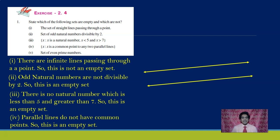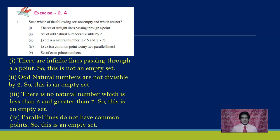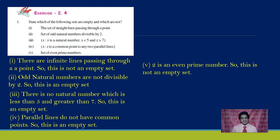Now look at the next one: the set of even prime numbers. Out of all the prime numbers, we know that 2 is the only even prime number. Since there is an element — namely 2 — in this set, it cannot be an empty set. So this is a non-empty set.